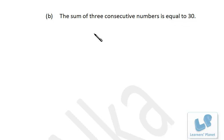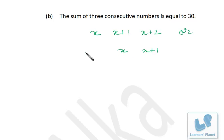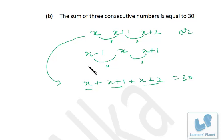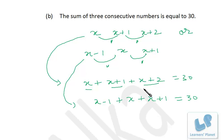'The sum of three consecutive numbers is equal to 30.' The first number is x, second is x + 1, third is x + 2. So x + (x + 1) + (x + 2) = 30. Alternatively, taking the middle number as x: (x − 1) + x + (x + 1) = 30. Both approaches work.